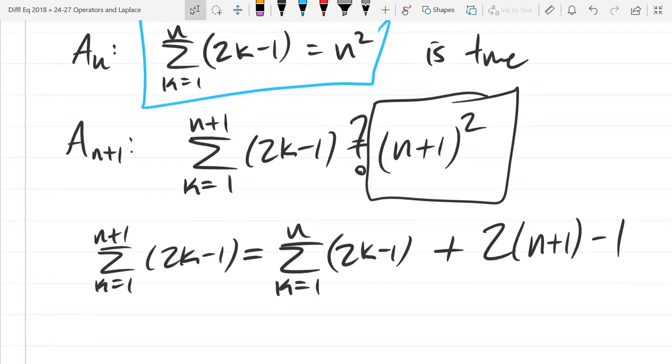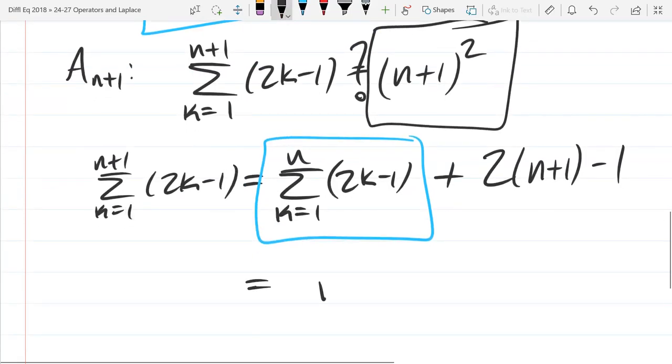Now I'm going to replace what is in the blue box with n squared. That's what it says at the top of the board is true. Let's do a little reduction on the algebra. I got 2n plus 2 minus 1. So it's 2n plus 1.